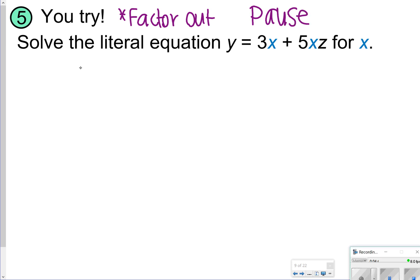Okay. So for this one, when we rewrite the equation, we can factor out the x. So we're undoing the distributive property. So we get x times 3 plus 5z in parentheses is equal to y.